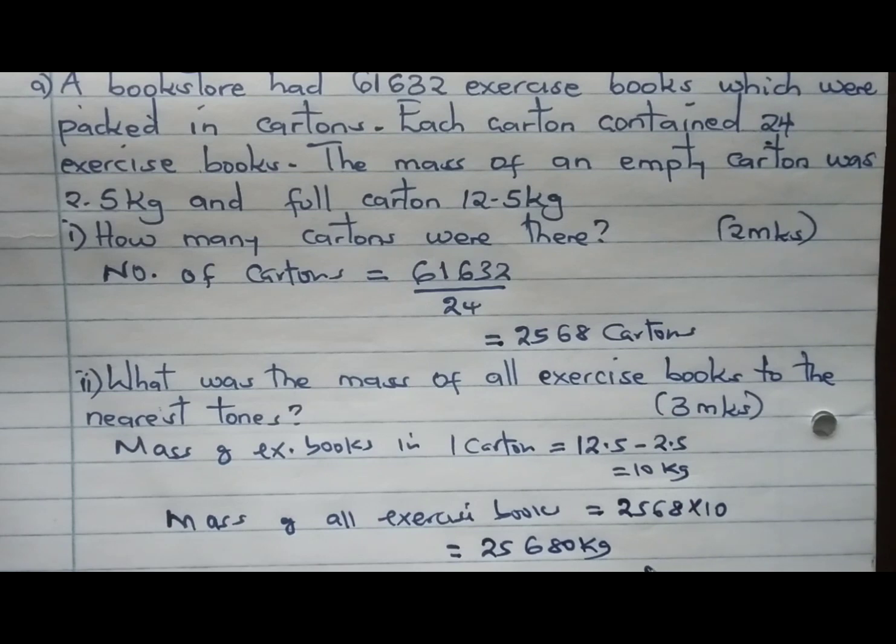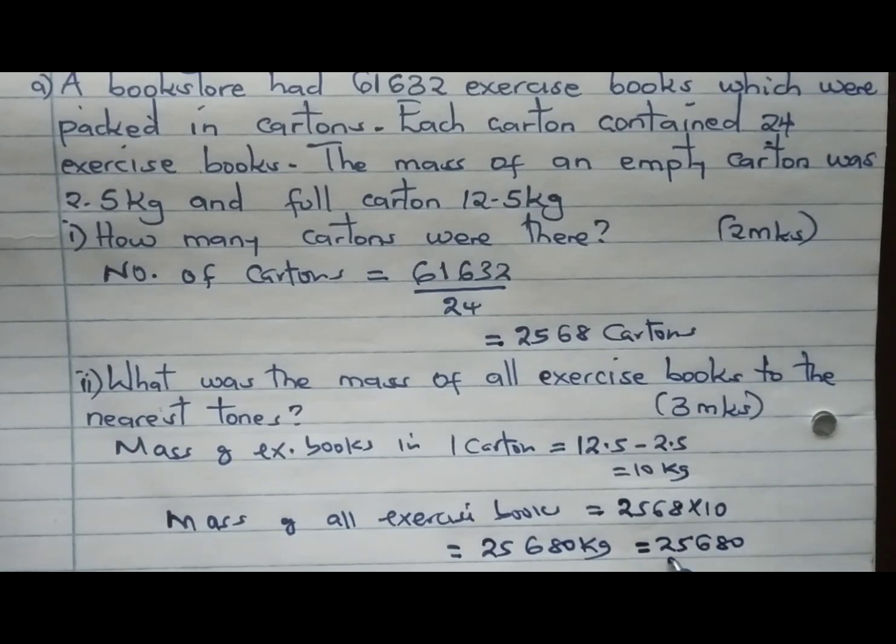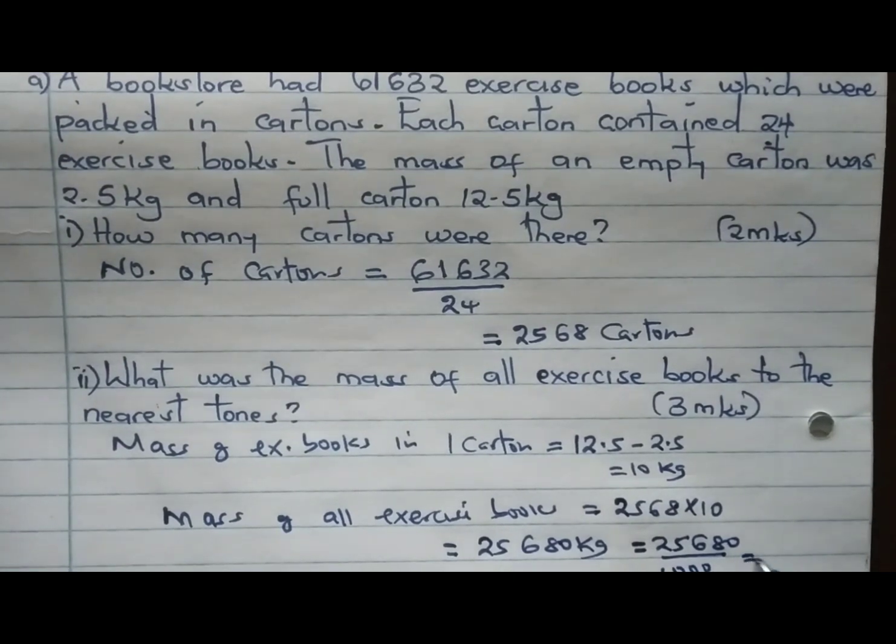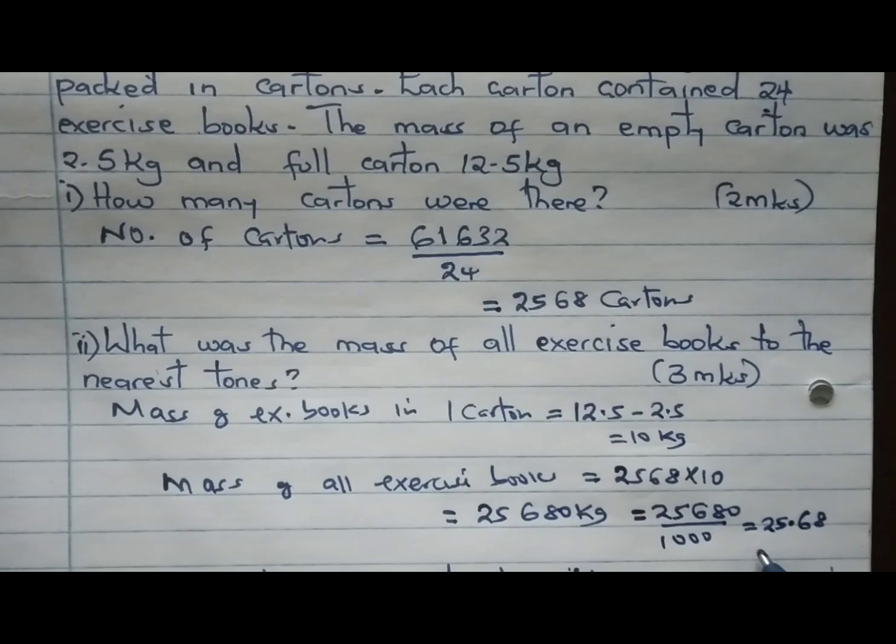To convert kilograms into tons, we know one ton has exactly 1,000 kilograms. Therefore, we take 25,680, divide by 1,000, and this gives us 25.68 and the answer is in tons.